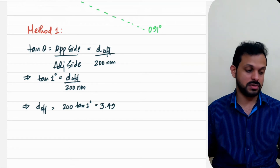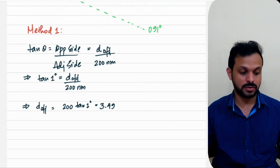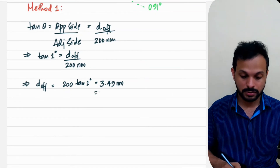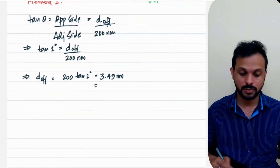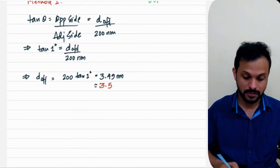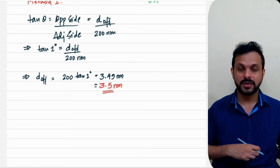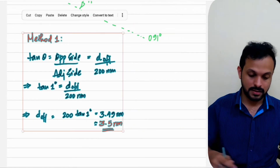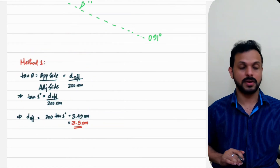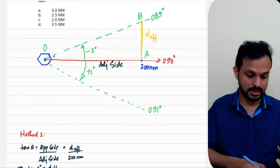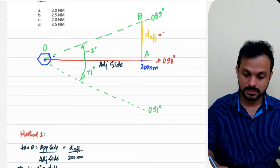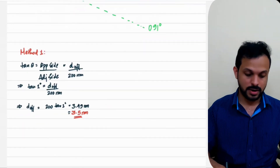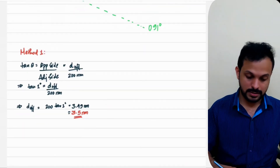Calculating 200 times tan(1°) gives 3.49 nautical miles. Rounding to one decimal place, looking at the answer options, that gives us 3.5 nautical miles. So using the trigonometric tan function with a right-angle triangle diagram, the cross-track distance off is 3.5 nautical miles. Let me mark that: 3.5 nautical miles using the trigonometry method.